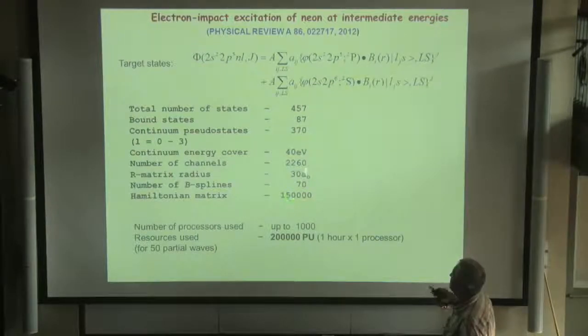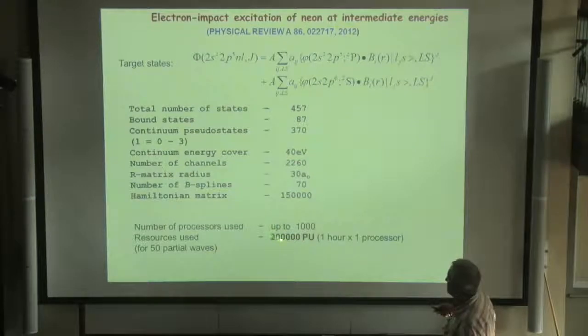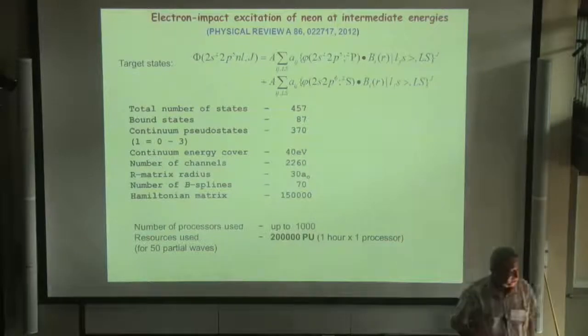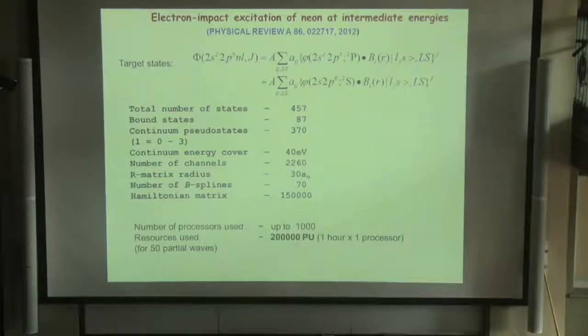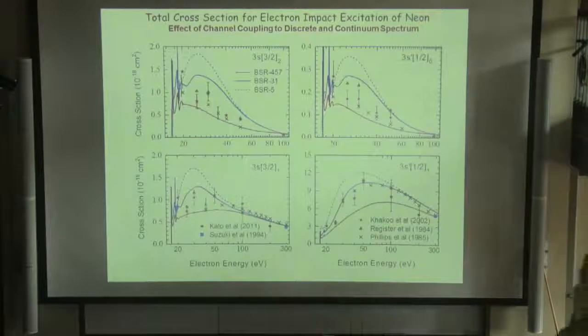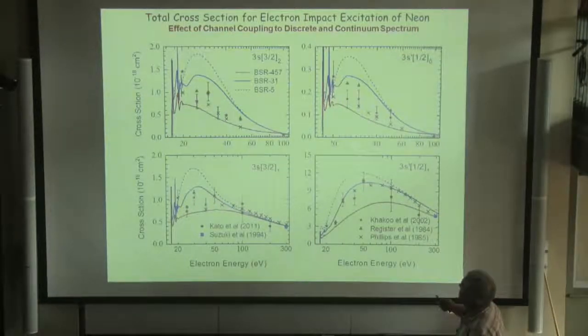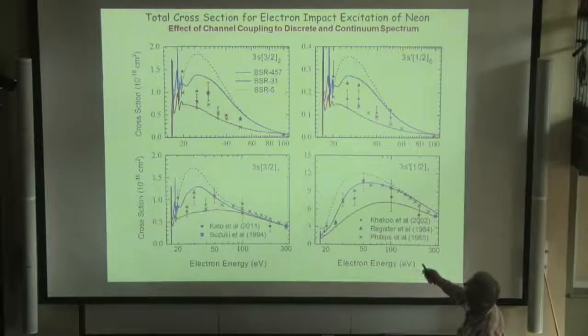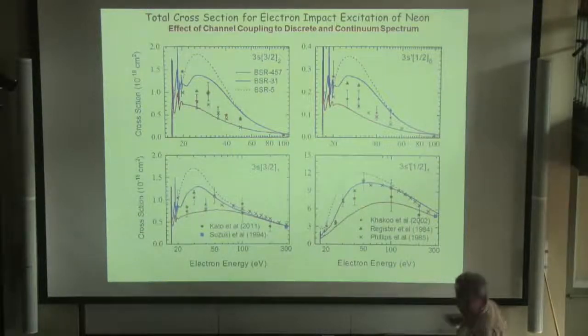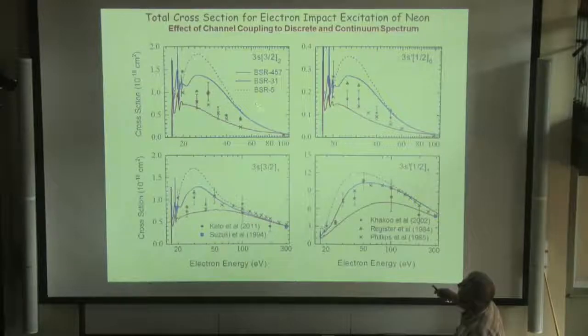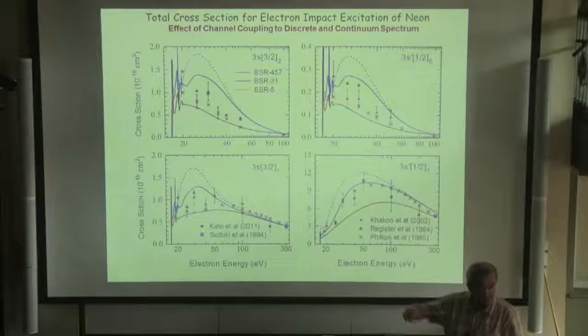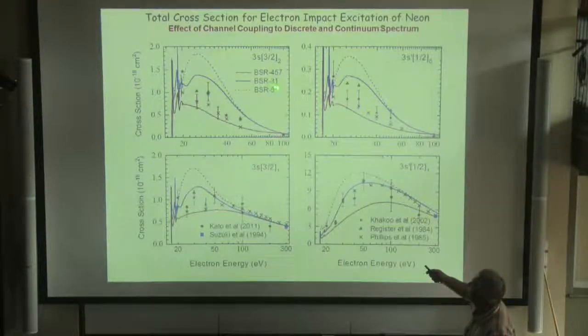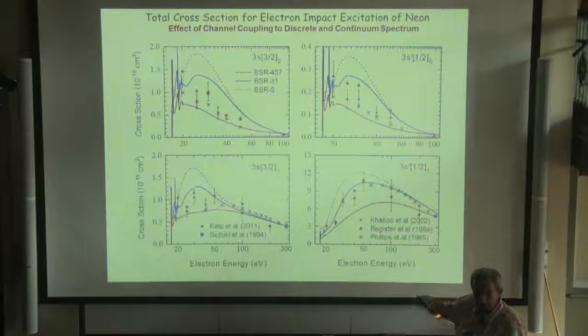And what we obtain here is drastic reduction in the excitation cross-section. For example, here, excitation to 3S states. BSR-5, for example, is just close to the pure result; inclusion of BSR-31, the 31 target bound states, of course has a big effect, but much bigger effect is inclusion of target continuum.